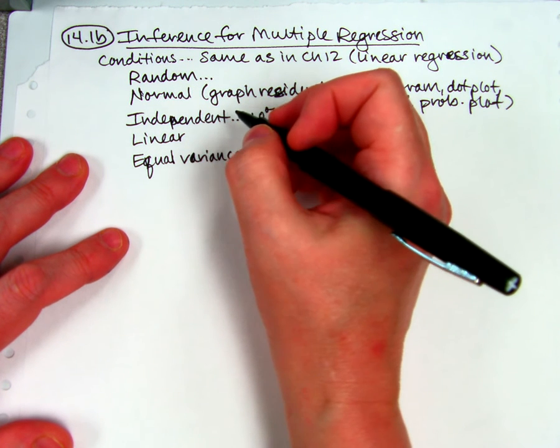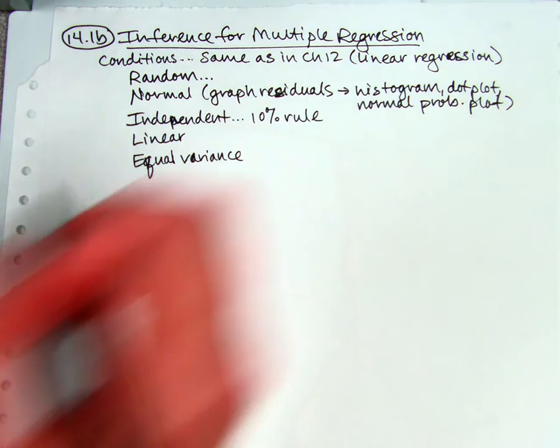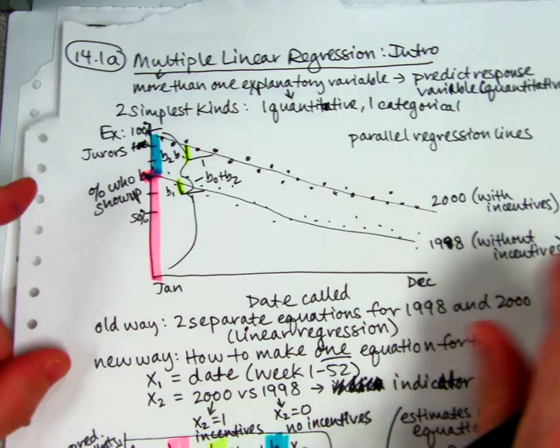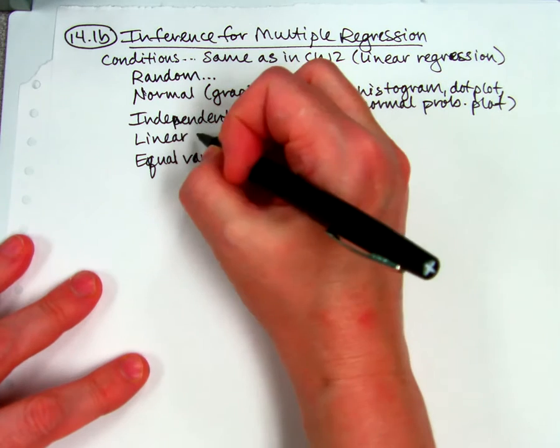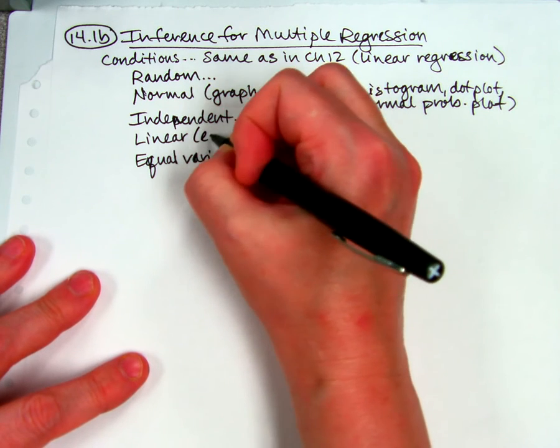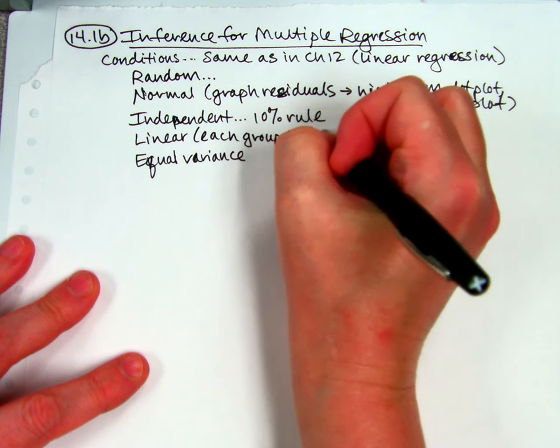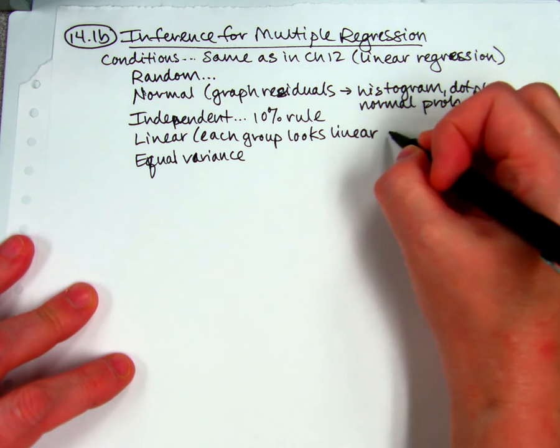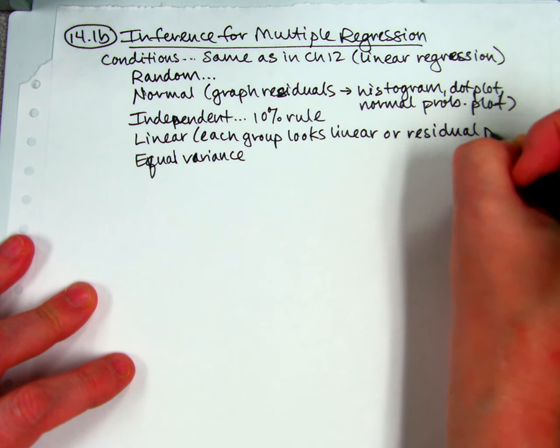And then remember in chapter 12, we had two more. There was one that said linear, and there was one that said equal variances. So linear, we're going to check the scatter plots. And remember that there's two lines on the plot. There's two lines, and they both have to be not curved. You could just look at the original scatter plot and see if each group looks linear.